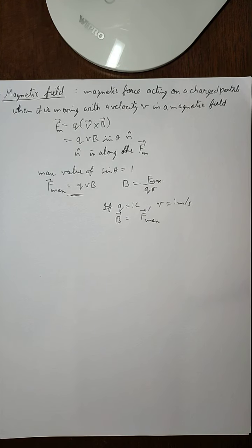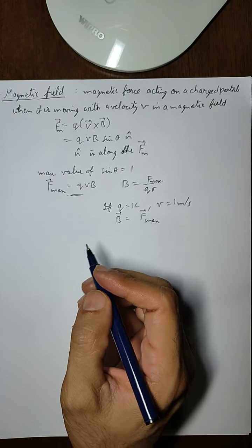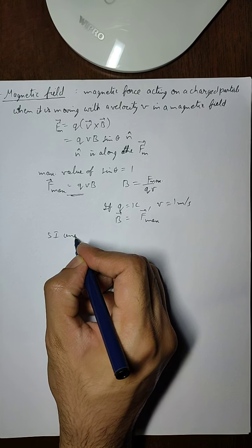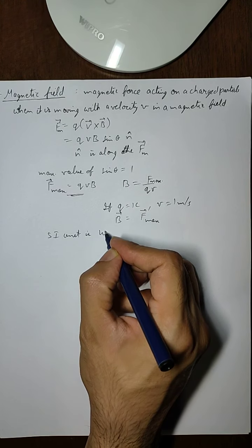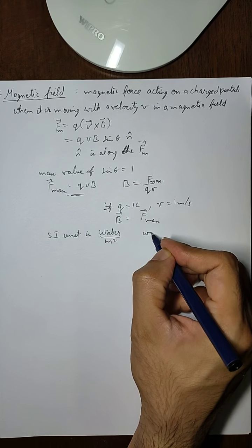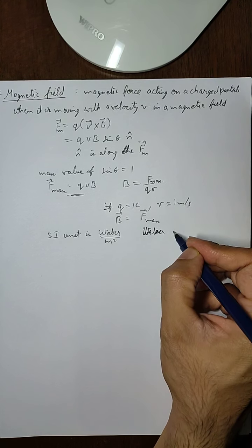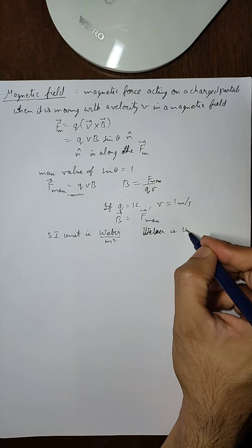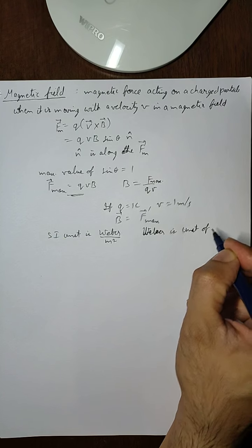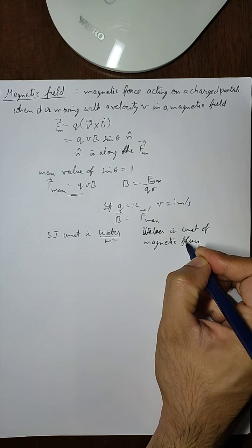It is a vector quantity, as we have already seen. The SI unit is Weber per meter square, where Weber (capital W) is the unit of magnetic flux.